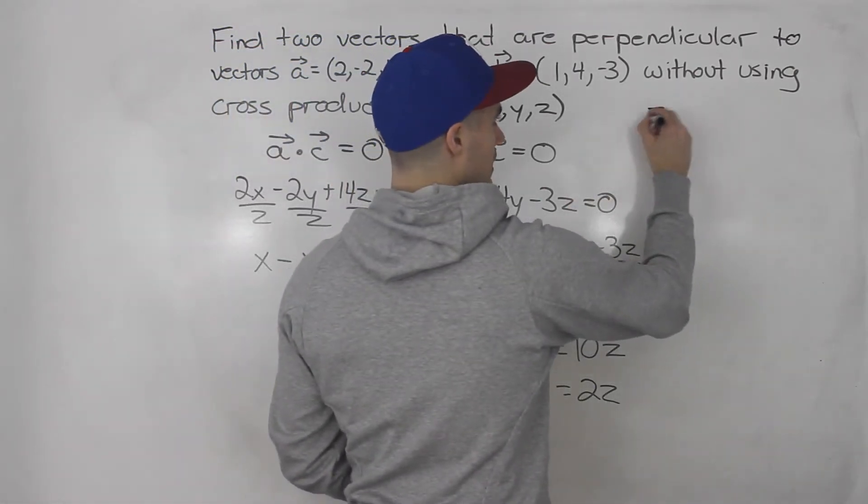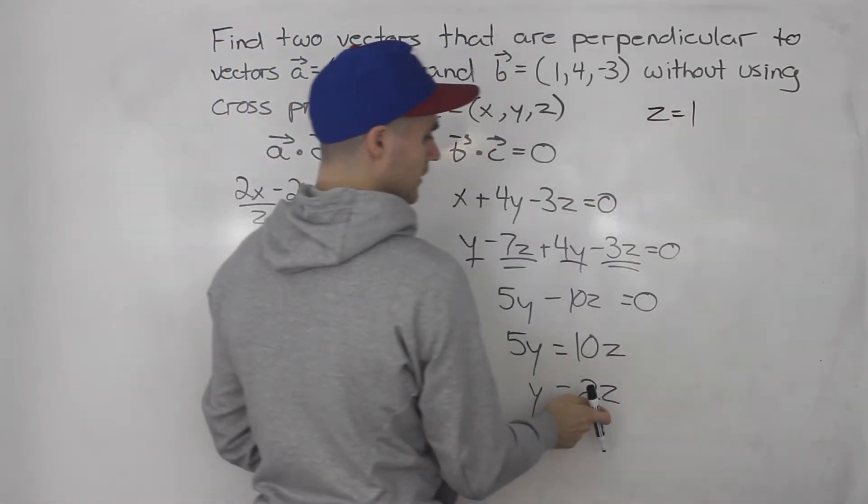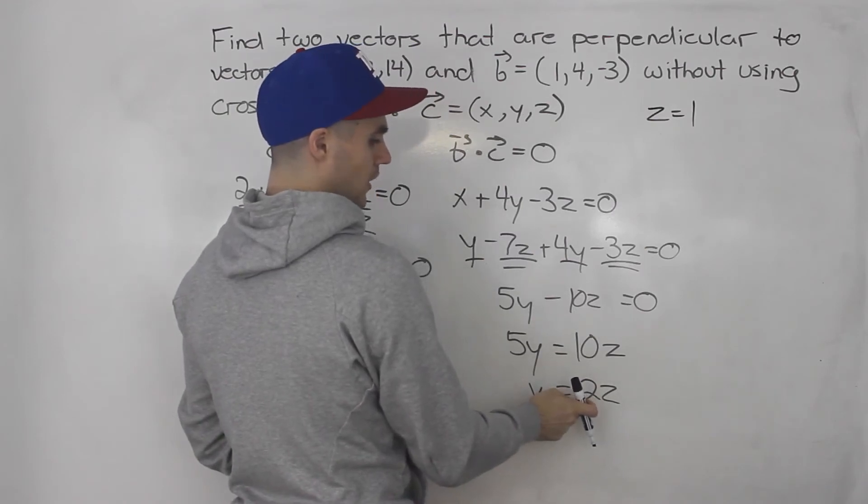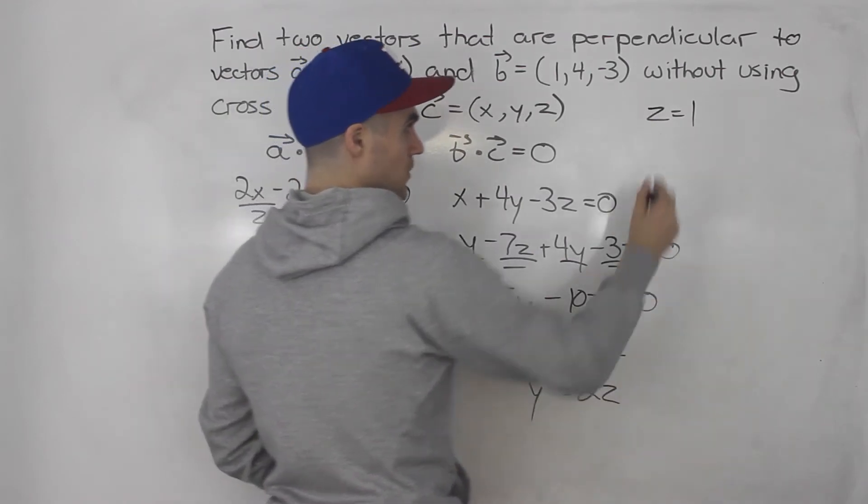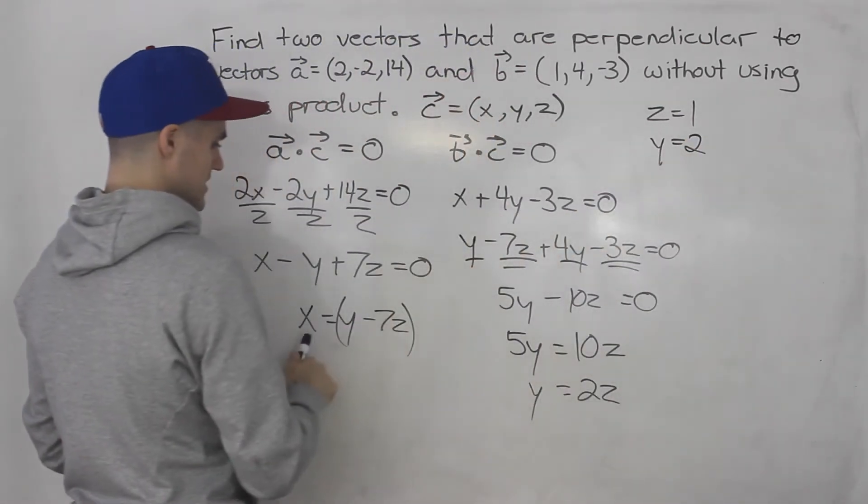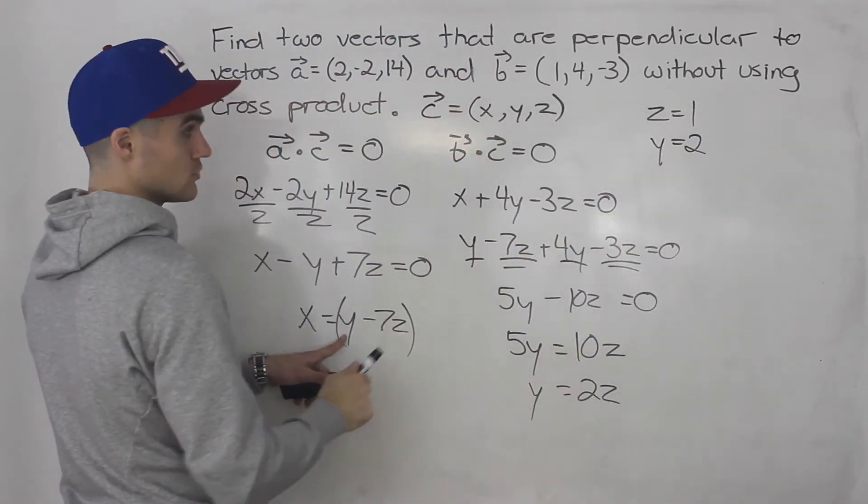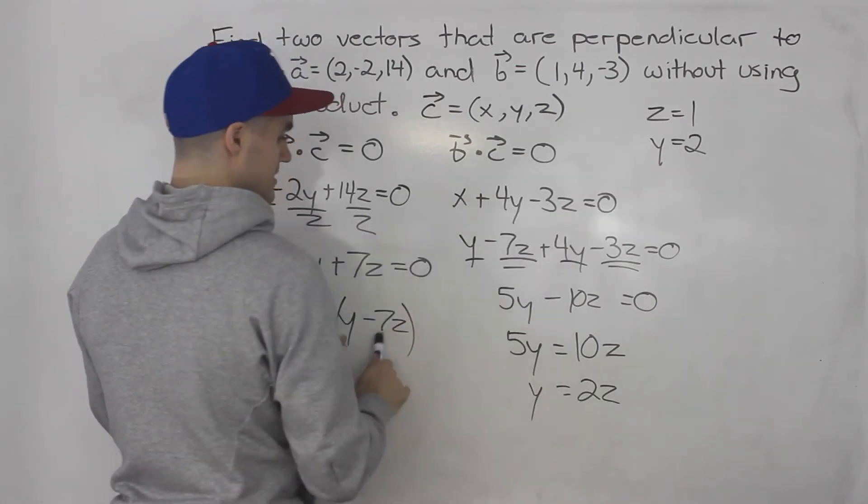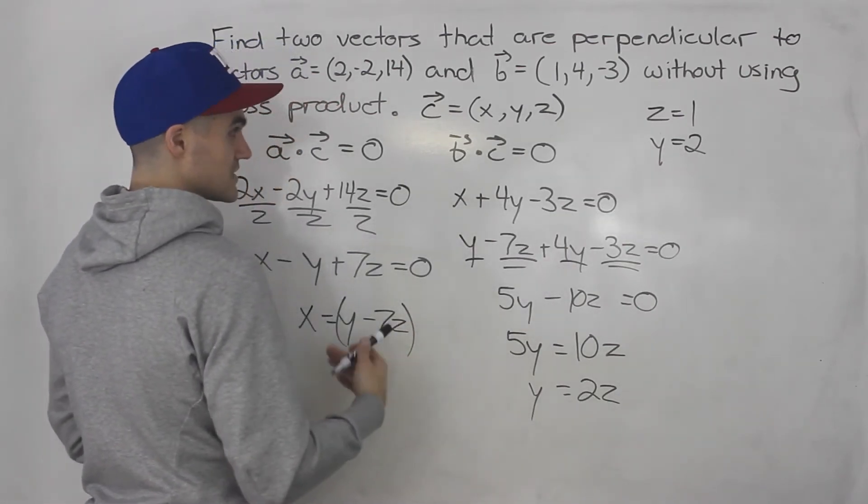Well, if Z is equal to 1, what's Y going to be? 2 times 1, which is 2. And if Z is 1 and Y is 2, what's X going to be? It's going to be 2 minus 7 times 1. So 2 minus 7 is negative 5.